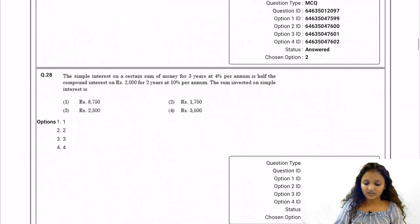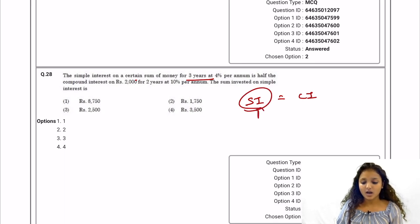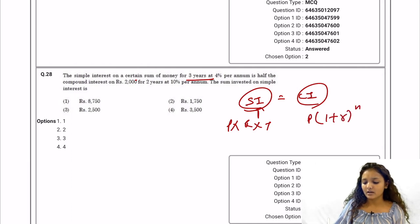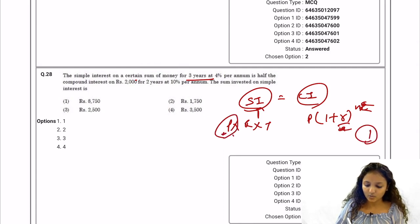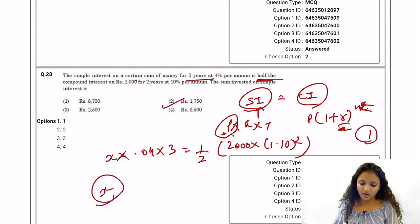Question 28: Simple interest on a certain sum for three years. We equate simple interest with compound interest to find the amount invested. Using SI formula P×r×t and CI formula P×(1+r)^n. We take SI as x × 2.04 × 3 equals half the compound interest, and CI as 2000 × (1.10)^2. Solving for x gives the answer as 1750. Option two is the correct answer.